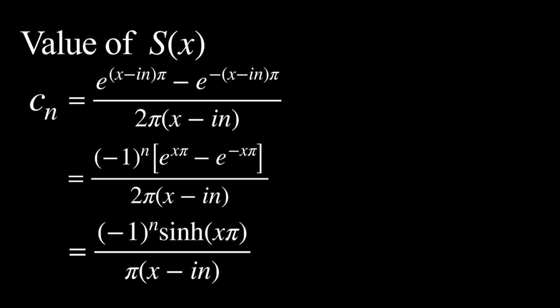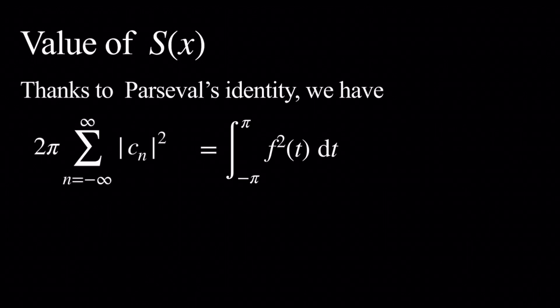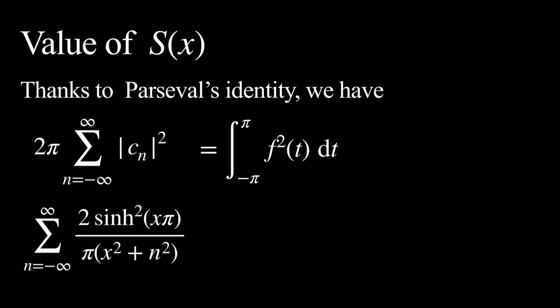Now what we want to do is use Parseval's identity. Using Parseval's identity, we have that 2π times the sum as n goes from negative infinity to infinity of the square of the modulus of c sub n is equal to the integral from negative π to π of f of t squared dt. Now we just need to compute. On the left-hand side, we're going to get 2 times the square of the hyperbolic sine evaluated at x π divided by π times x squared plus n squared. On the right-hand side, we're going to get an antiderivative of e to the 2x t evaluated between negative π and π, giving e to the 2x π minus e to the negative 2x π divided by 2x.